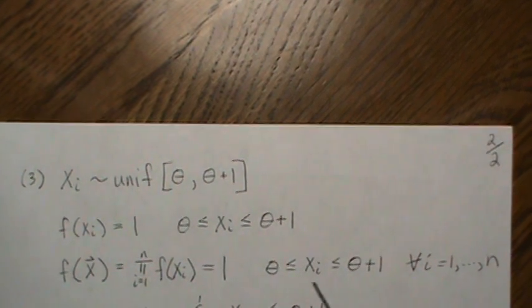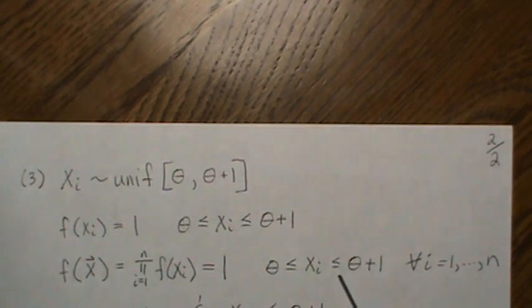So then the joint density, that's a vector, is a product of the marginals, that's still one. And so Xi has to be between these two points and we're going to allow for equal signs.